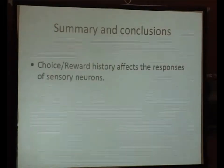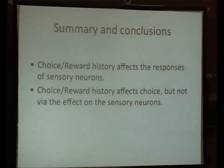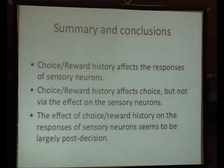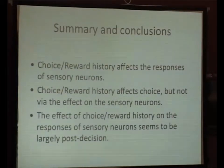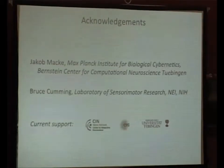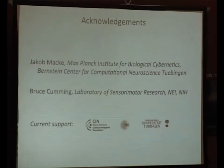To summarize: choice and reward history affects the responses of sensory neurons, and it also affects the choice — but not via the effect on the sensory neurons. Finally, the effect of choice and reward history on the responses of the sensory neurons seems to be largely via post-decision feedback. I'd like to acknowledge Jakob Macke, with whom I did this analysis — it was a lot of fun — and also Bruce Cumming, in whose lab I collected all the data, which was also a lot of fun over the years. Thank you for the attention.